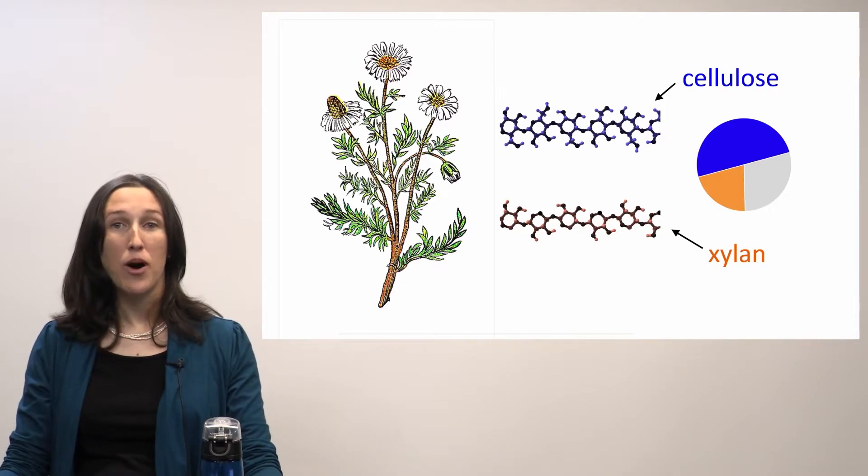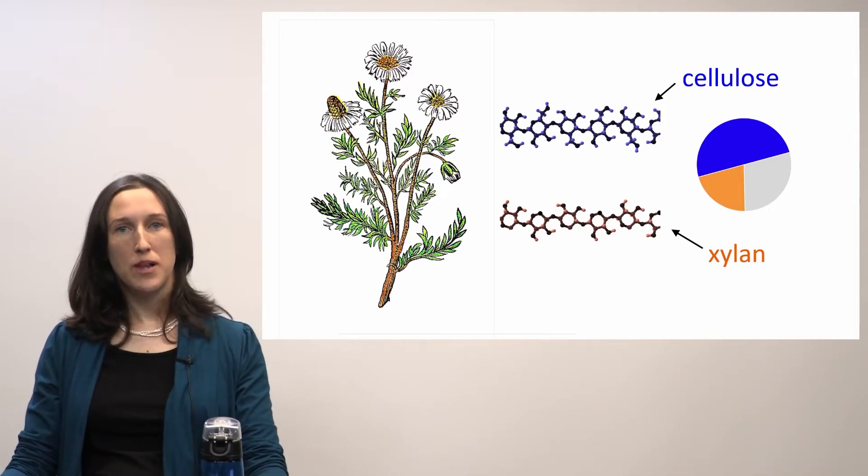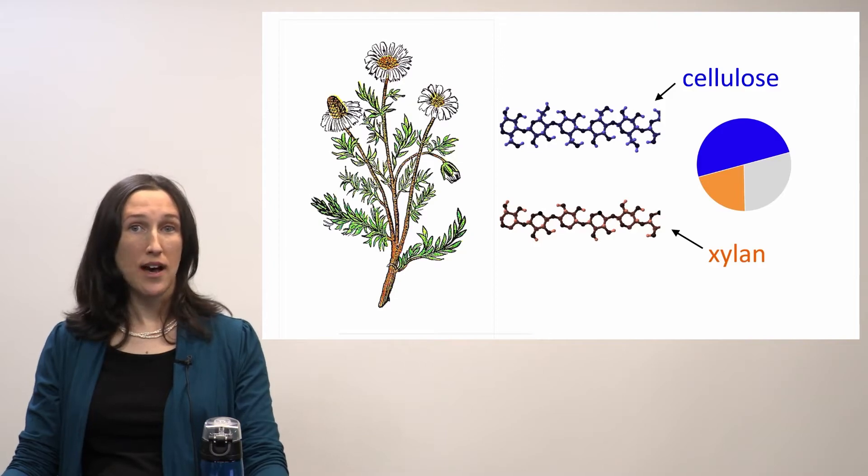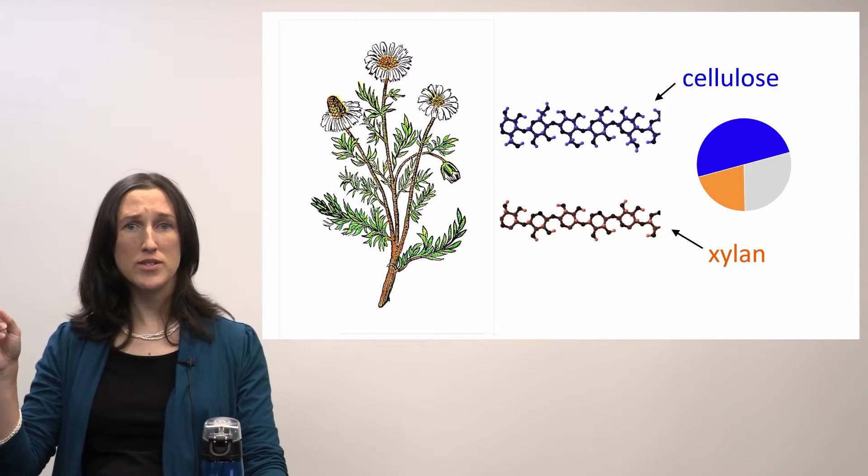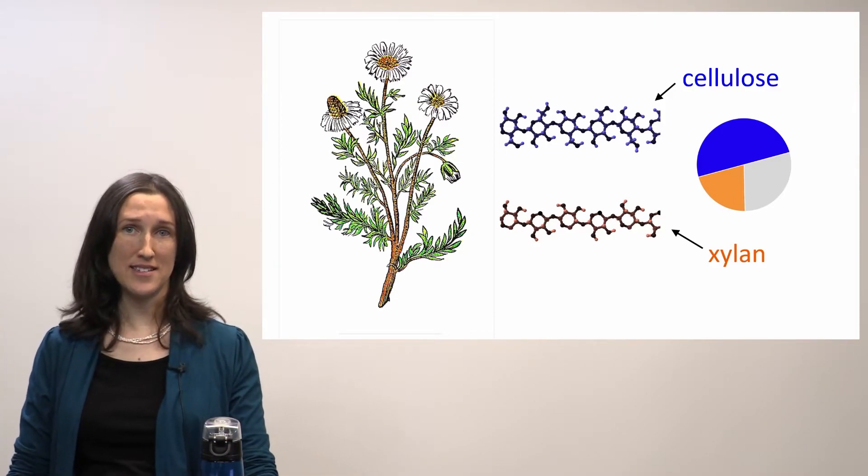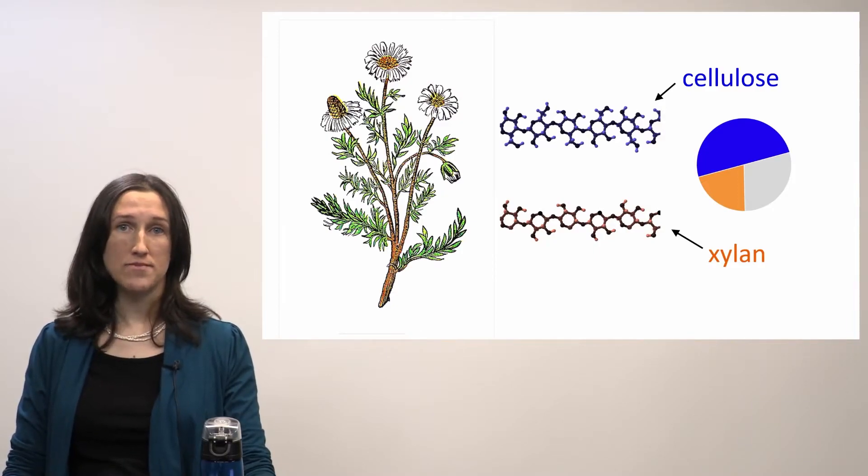Plants, another example. So plants—half of this plant's dry weight is made of the polymer cellulose. About a fifth of this plant's dry weight is the polymer xylan. What if we could use these polymers to make our plastics instead of cornstarch or crude oil?